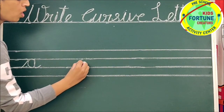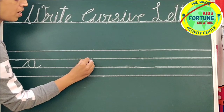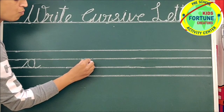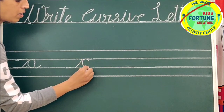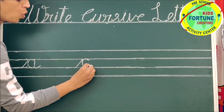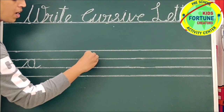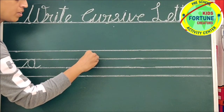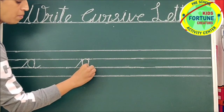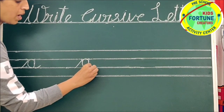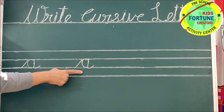Go up with slant line. Move forward. Come back. Go up with standing line. Again come back on same line. Make a 10. A.